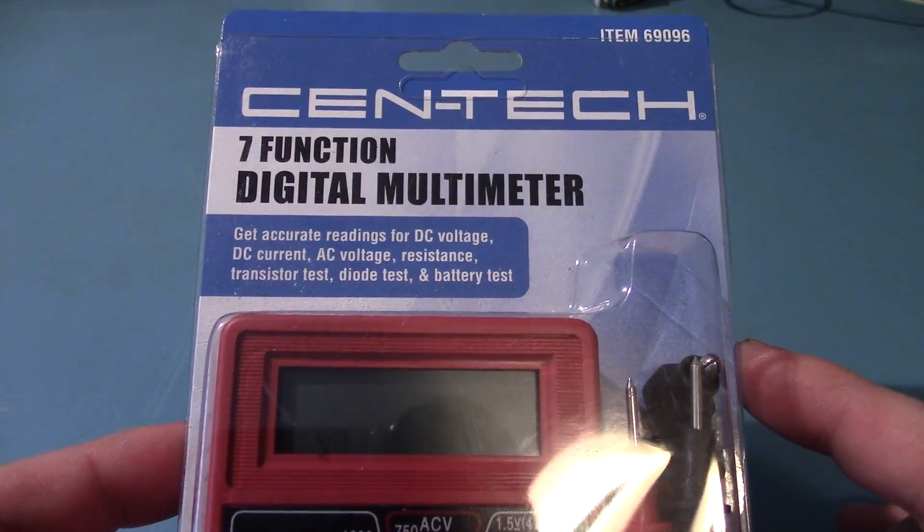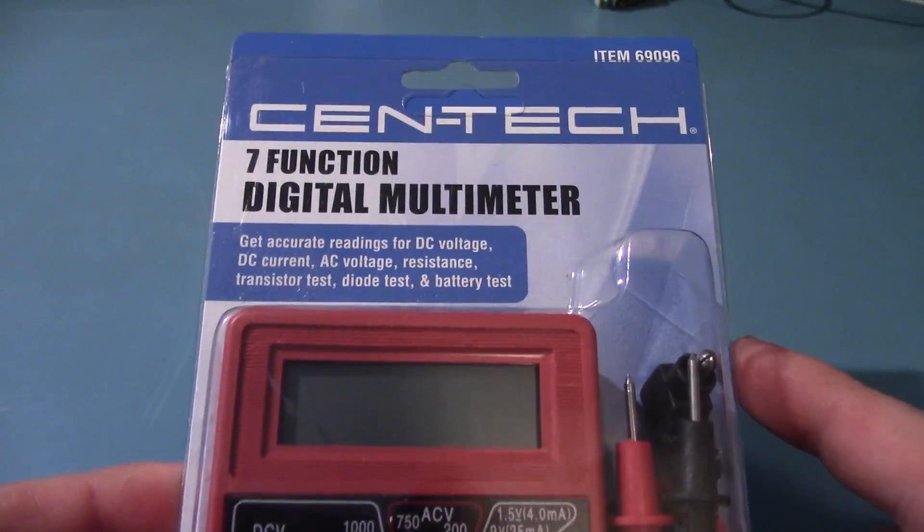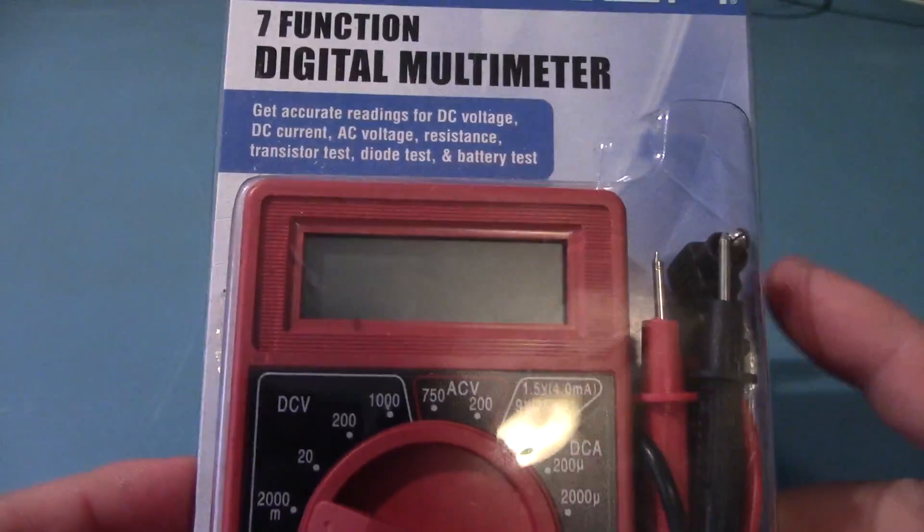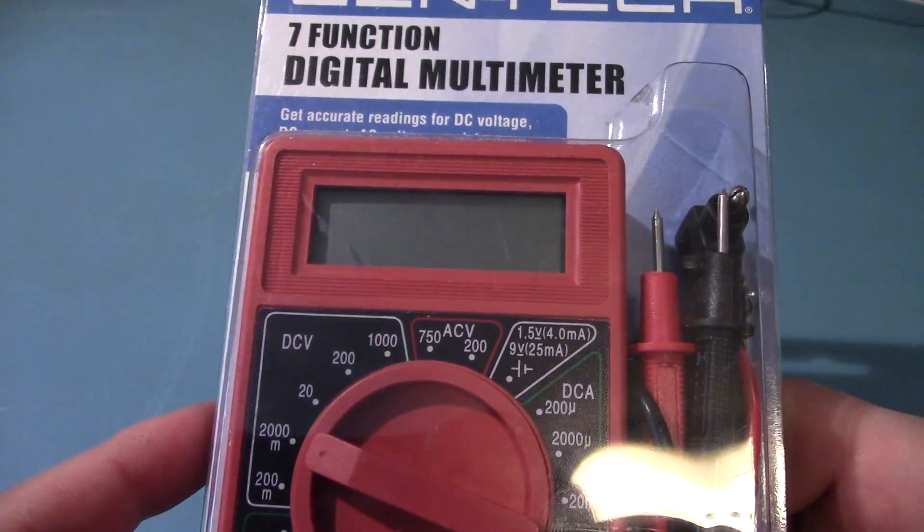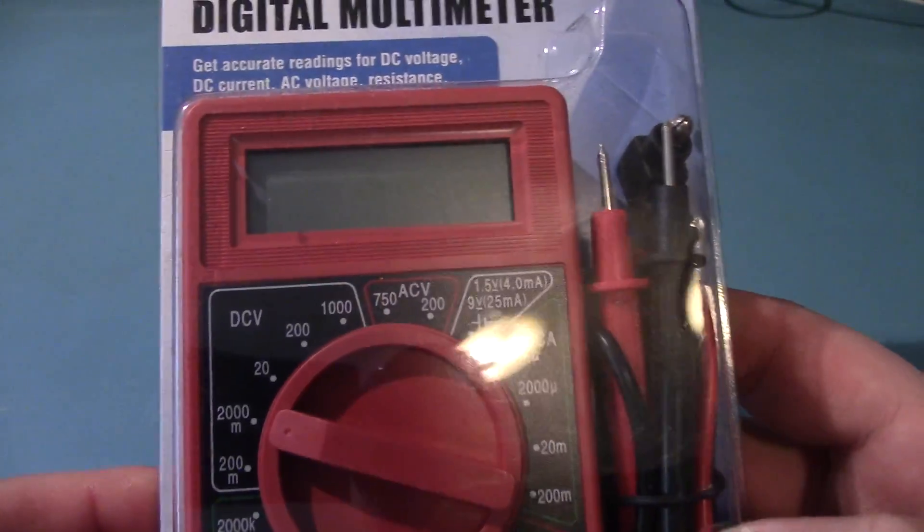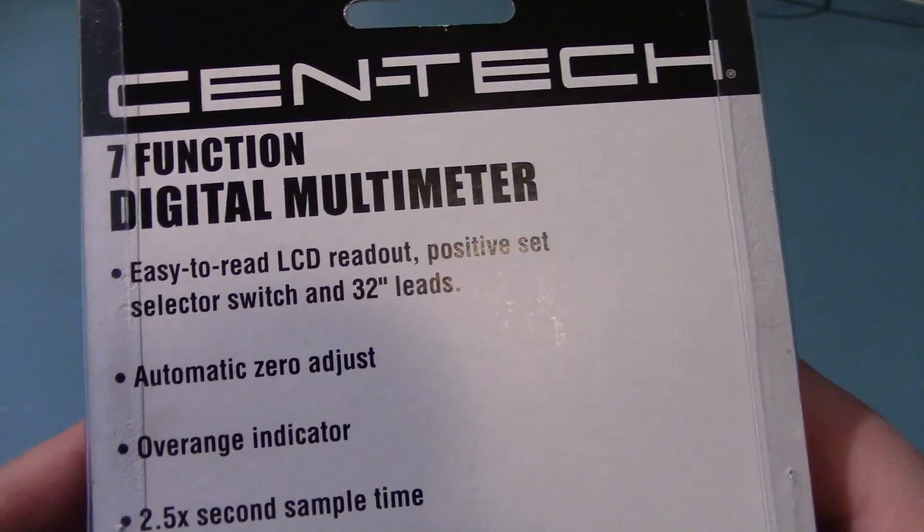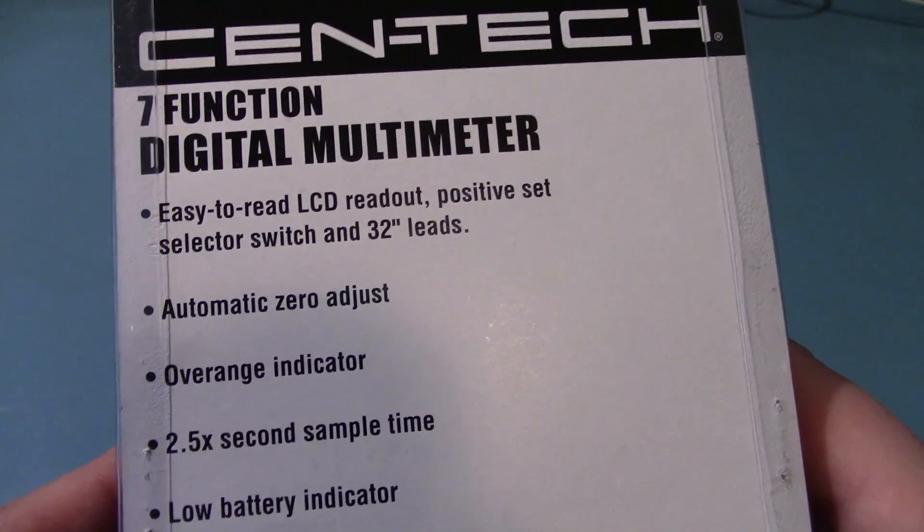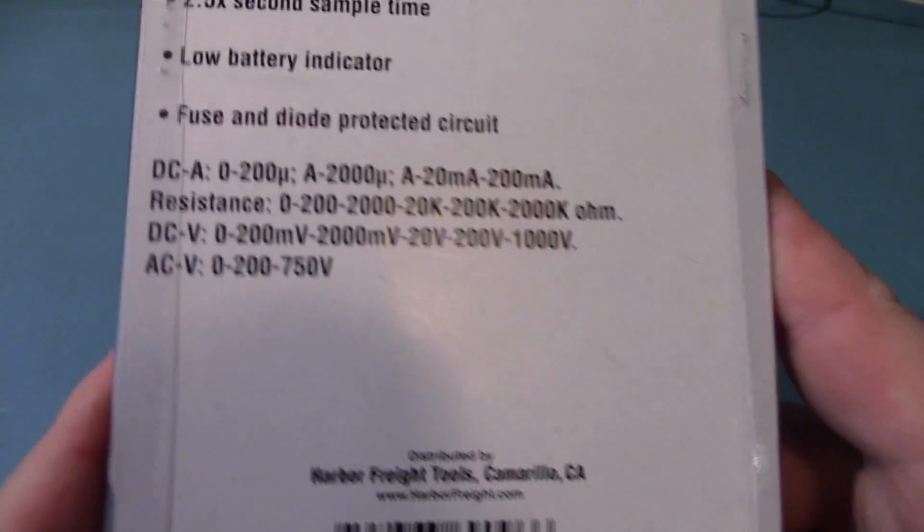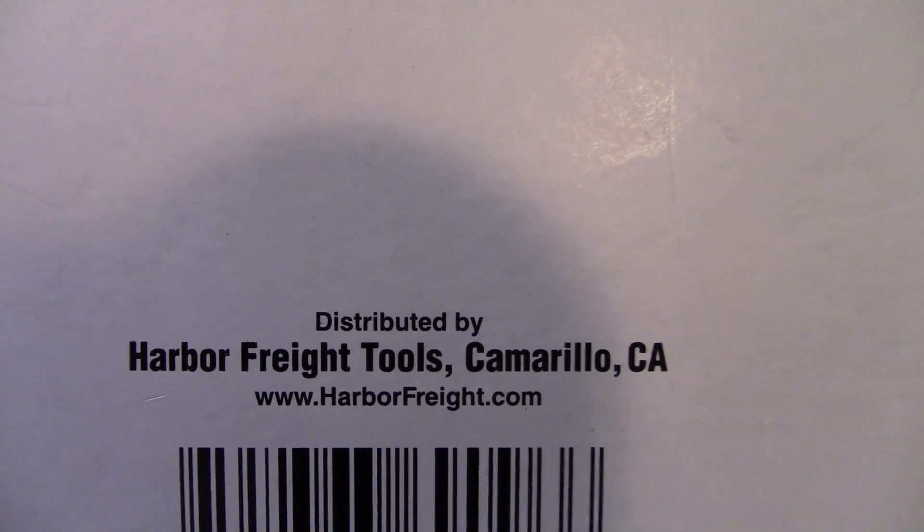Today I'm going to look at one of the worst multimeters I have ever seen. It's a Centec. These things are everywhere on eBay, usually around five bucks if not less. I've seen them sell for as low as $2.99. It's a seven function multimeter with automatic zero adjust and a bunch of other features, distributed by none other than Harbor Freight.